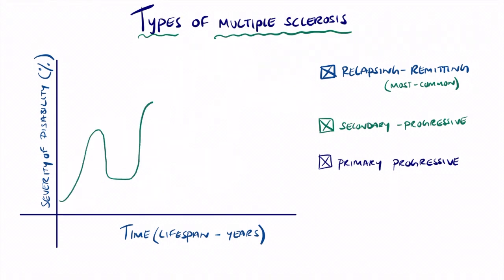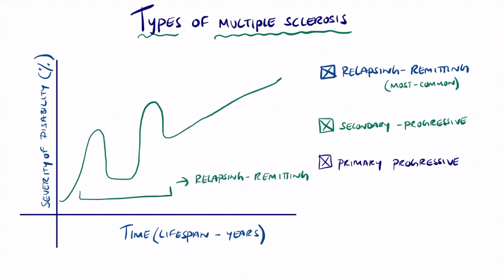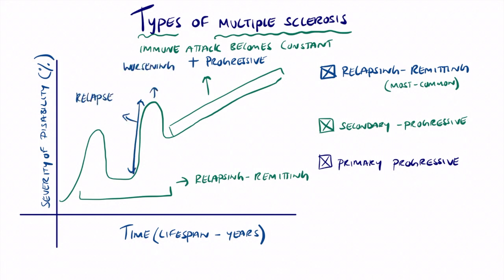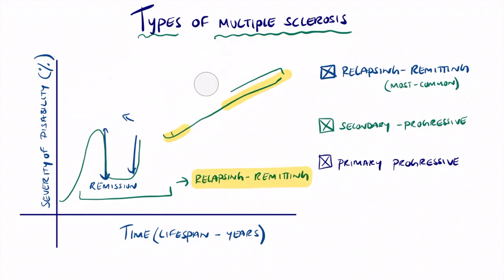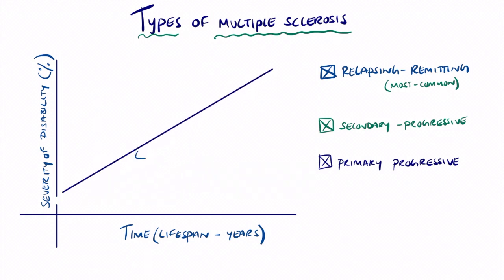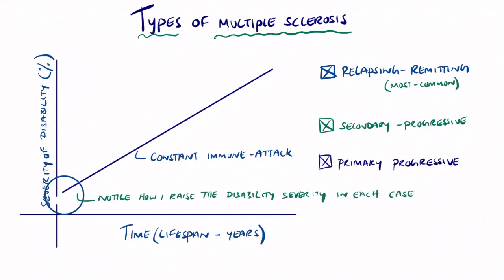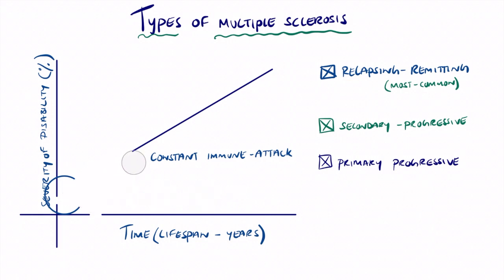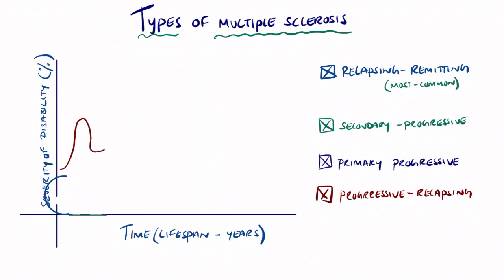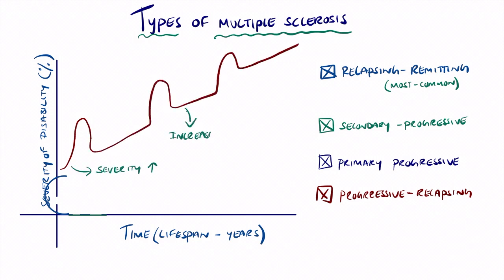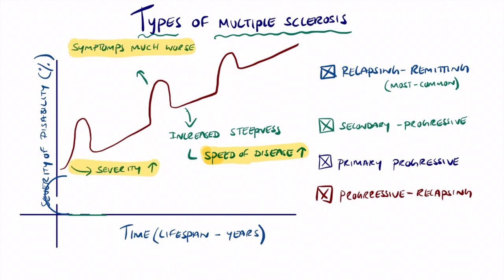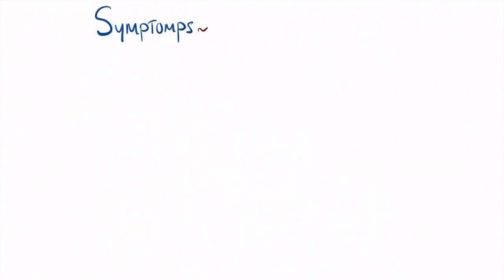In secondary progressive MS, the severity is higher. The first part resembles relapsing-remitting MS, but then there is a constant immune attack leading to a progressive disorder — an initial relapsing-remitting phase that eventually becomes constantly progressive. Primary progressive MS is represented by a straight upward line, with constant immune attack and constant worsening of symptoms, cognitive behaviour, dysarthria, and other conditions. Finally, progressive relapsing MS has a much higher severity of disability compared to the other three, with signs of remitting and relapsing visible on the graph.